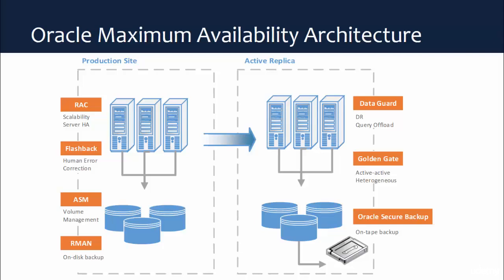Oracle DataGuard is considered to be part of the Oracle Maximum Availability Architecture. This architecture includes many Oracle technologies including Oracle RAC, which is used for scalability and high availability; Oracle Database Flashback for recovering from human error; ASM for disk management; RMAN for database backup; DataGuard for disaster recovery and query offload; GoldenGate for active-to-active replication among databases; and Oracle Secure Backup for tape backup. You can Google Oracle MAA to obtain more details about those technologies.